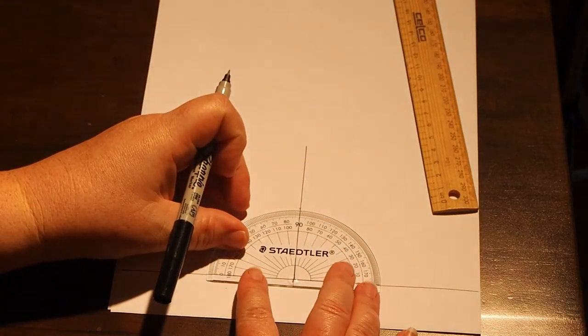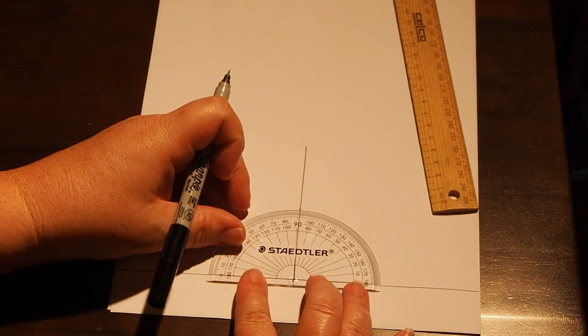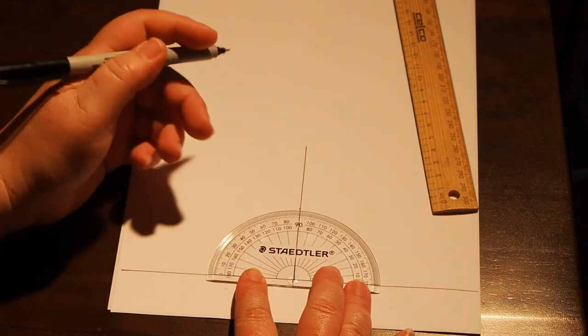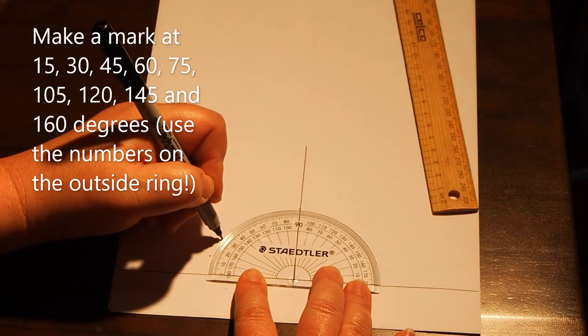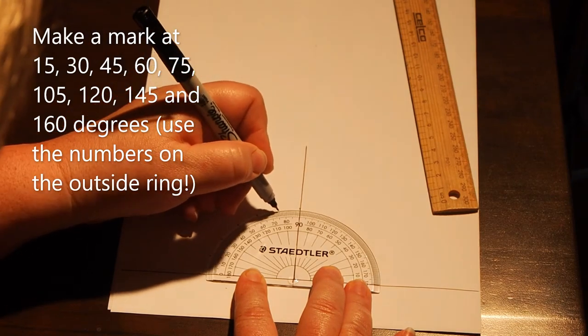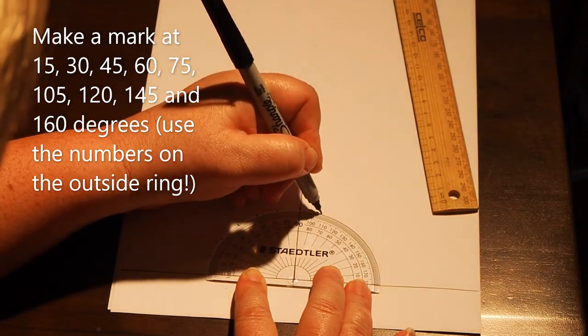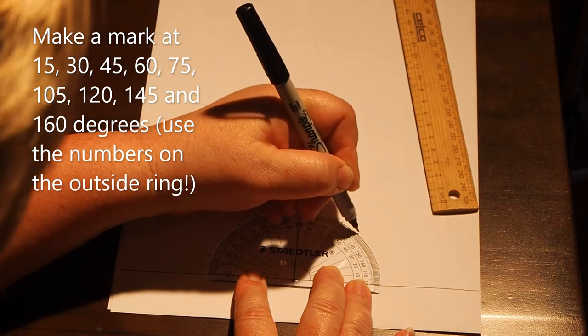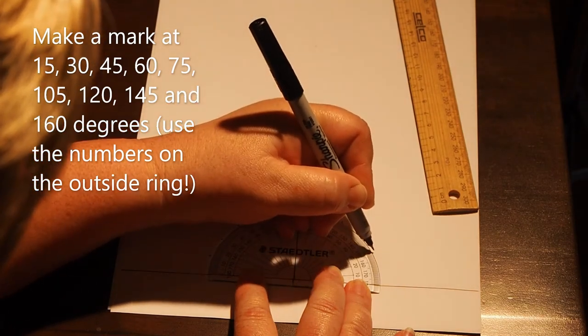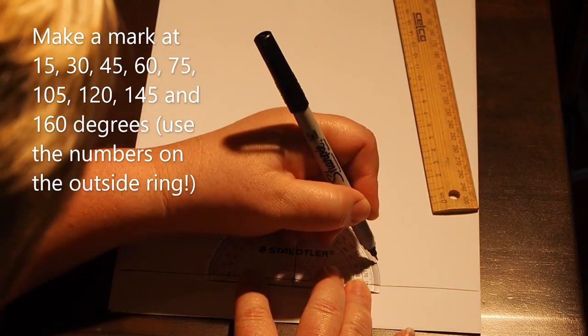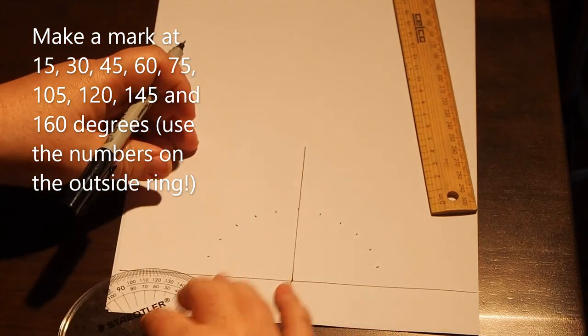Place the protractor crosshairs back on the apex. Be careful to line it up accurately. Measure and make a dot every 15 degrees at 15, 30, 45, 60, 75, 105, 120, 135, 145, and 165 degrees.